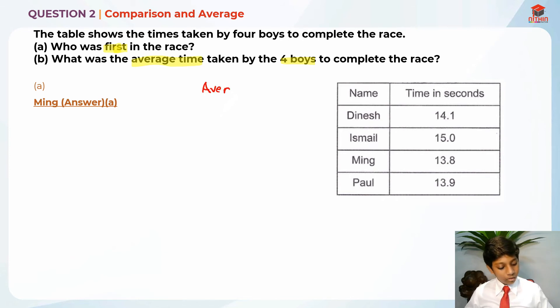Average is basically the total, so the total meaning this plus this plus this plus this, add them all. So basically 14.1 plus 15.0 plus 13.8 plus 13.9 is the total, and then you divide by the number.